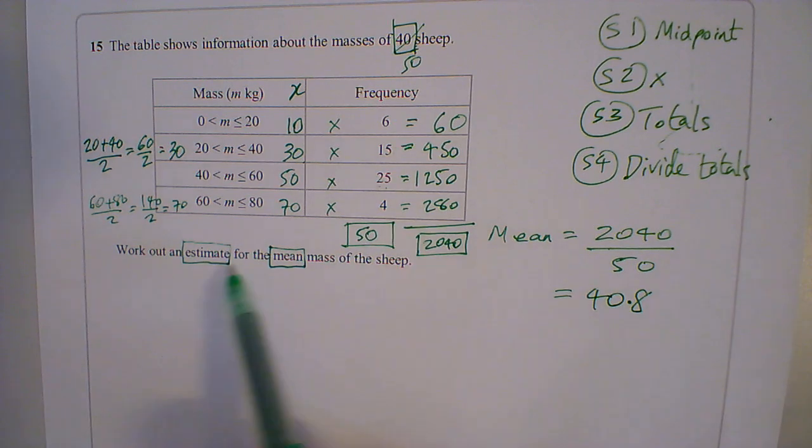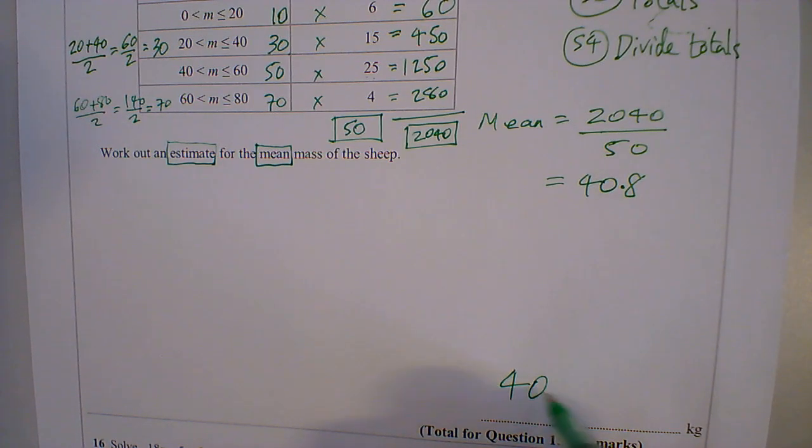Now if I read the question, work out an estimate, so this is an estimate, so my mean can be a decimal. And work out an estimate for the mean mass of the sheep, so my answer is 40.8.